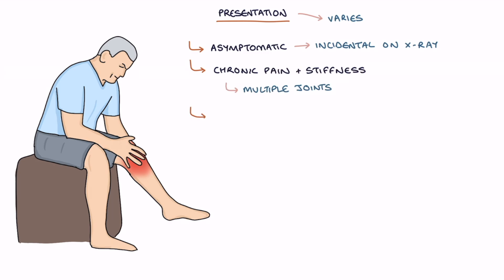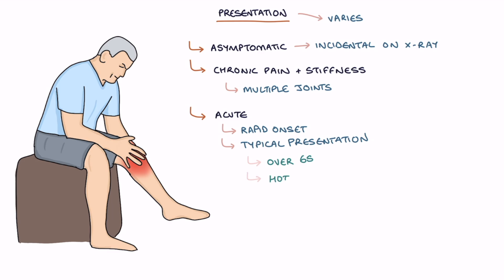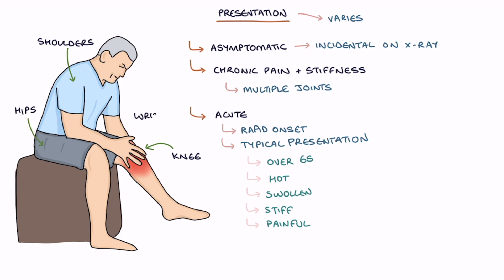It can also present acutely with a rapid onset of symptoms. A typical acute presentation of pseudogout is a patient over the age of 65 with a rapid onset hot, swollen, stiff and painful knee. Other commonly affected joints are the shoulders, hips and wrists.